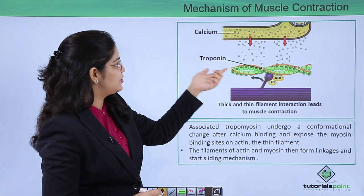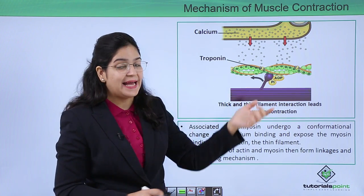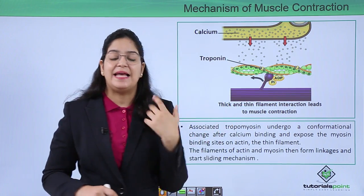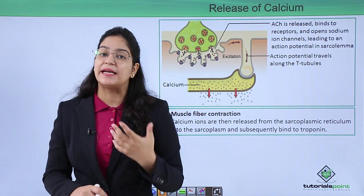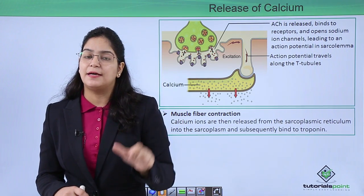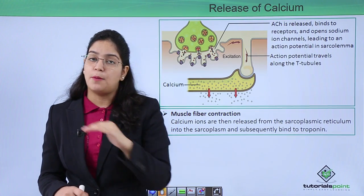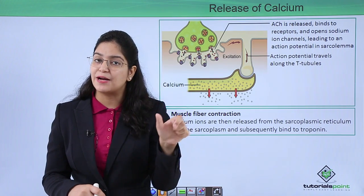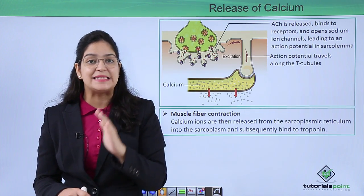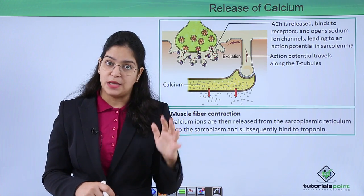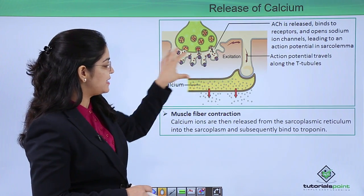This is our sarcoplasmic reticulum, which releases calcium. Calcium attaches to troponin, which removes tropomyosin. Then the myosin head attaches with its ADP and Pi, and muscle contraction starts. Now, how is this calcium released? When an impulse comes to the muscle, it reaches the top layer — the sarcolemma. From the sarcolemma, the impulse travels to the sarcoplasm through an extended part called the T-tubule.